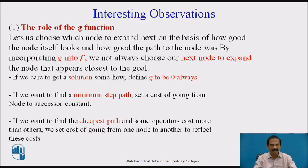There are some interesting observations from this algorithm. First, the role of the G function: we choose which node to expand next on the basis of how good the node itself looks and how good the path to the node was, by incorporating G into F'. We do not always choose the node that appears closest to the goal. If we just want to find a solution somehow, define G to always be 0. If we want to find a minimum-step path, set the cost of going from one node to a successor as a constant. If we want to find the cheapest path and some operators cost more than others, set the cost of going from one node to another to reflect those costs.